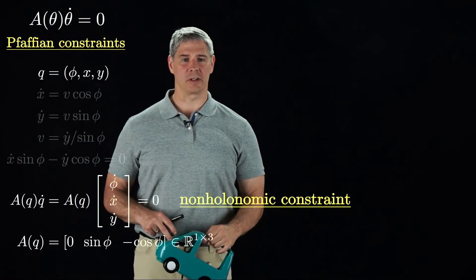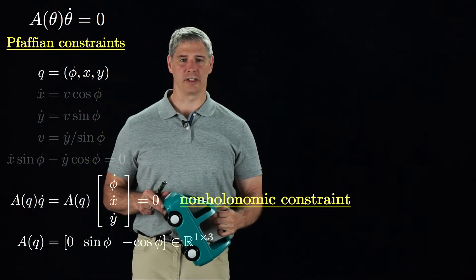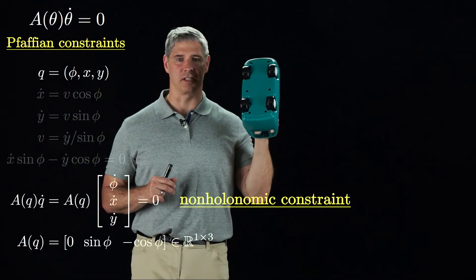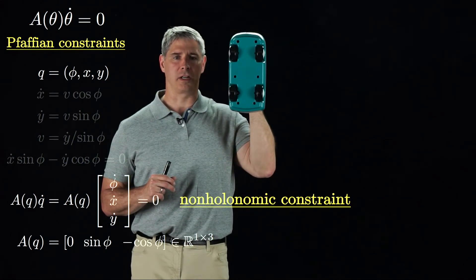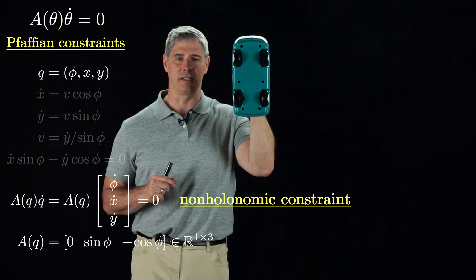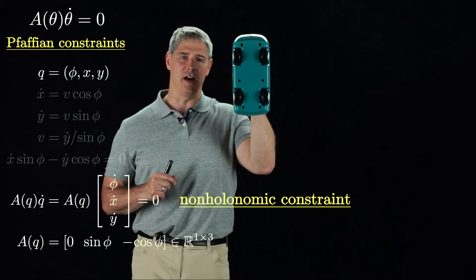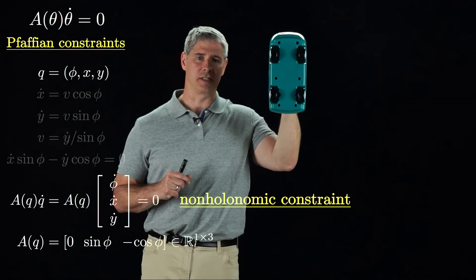A robot can be subject to both holonomic and non-holonomic constraints. Again, using the car as an example, if we consider the chassis to be a rigid body in space, then three holonomic constraints keep the chassis confined to the plane, while one non-holonomic constraint prevents sideways sliding.